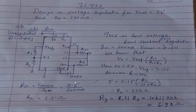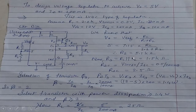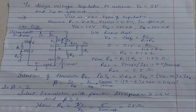Now we discuss the second problem: design a voltage regulator for Vout equal to 5 volts and output current equal to 200 milliamperes. Since IC723 provides only 150 mA, the required 200 mA is a high current. With Vout still at 5 volts, this is a low voltage, high current type of regulator.